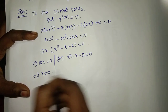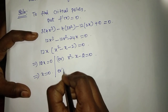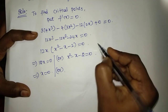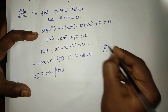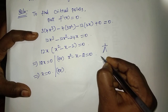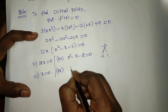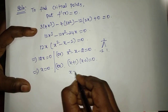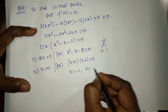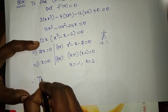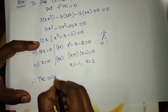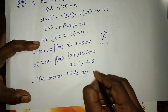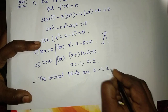From 12x equals 0, x equals 0. Next, factorizing x squared minus x minus 2: multiply to get minus 2 and add to get minus 1, giving factors (x plus 1)(x minus 2) equals 0. Therefore x equals minus 1 and x equals plus 2. The critical points are 0, minus 1, and plus 2.